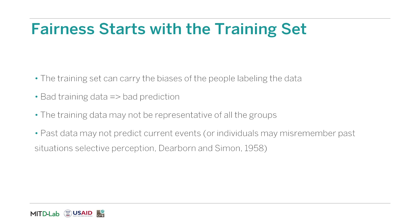Training starts with a good quality training set. Low quality data, generally speaking, leads to bad predictions. The individuals labeling the data — for example, managers labeling a resume as a hire or a no-hire — may carry biases which are then picked up by the machine learning algorithm. Training data may not be representative of all groups, which could lead to bias. And there may be hidden correlations in input data, for example between a protected attribute and another predictor, which can also lead to bias. Individuals labeling the training data may also misremember past situations, a phenomenon known as selective perception, which may itself become a source of bias.